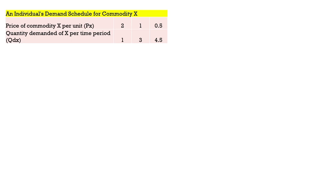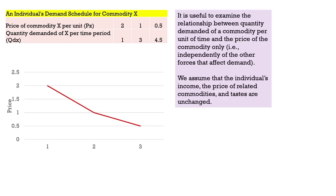Given the inverse quantity-price relationship, a demand curve is generally downward sloping—either linear or non-linear. It examines the relationship between quantity demanded per unit of time and price only, assuming all other things remain constant: consumer incomes are not rising, tastes are not changing, and prices of related goods have not changed.